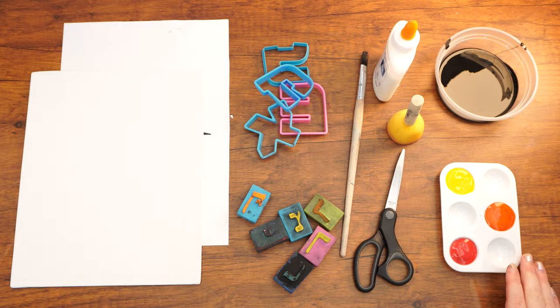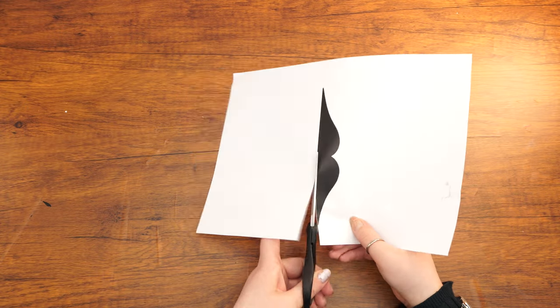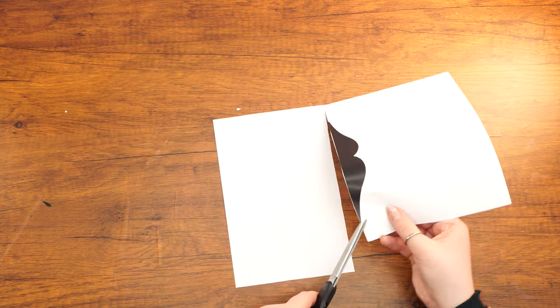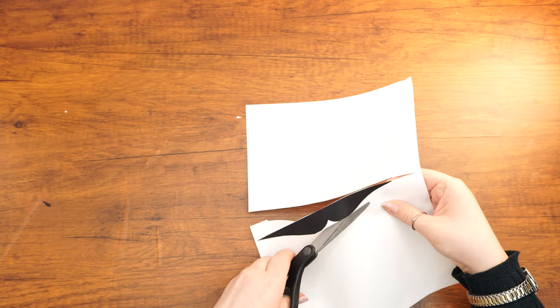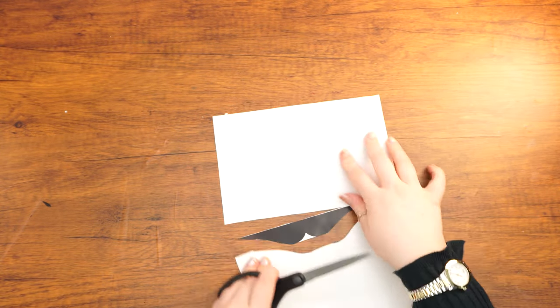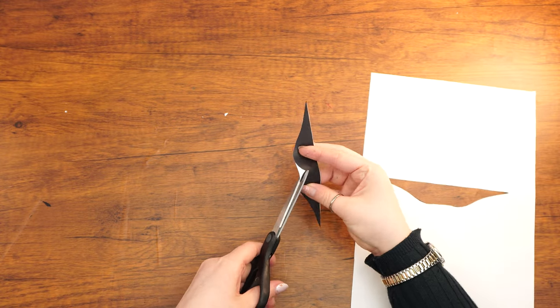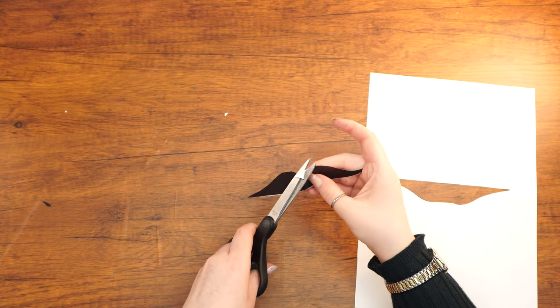Let's begin. First, cut out the open book template. On Lag BaOmer we have the custom to light bonfires. This is because the Torah and especially the secrets within it are compared to fire. Just as Rashbi revealed the secrets of Torah to all of us, we too can share with someone a part of the Torah that they don't yet know.